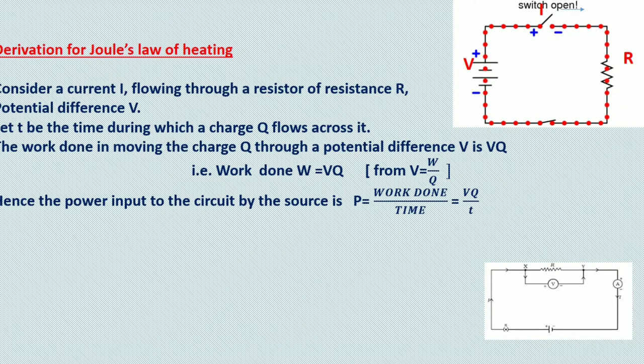The power input to the circuit by the source is given by work done upon time. Substituting for work done as VQ from the previous equation and time as t, we obtain P = VI. From the equation I = Q/t.